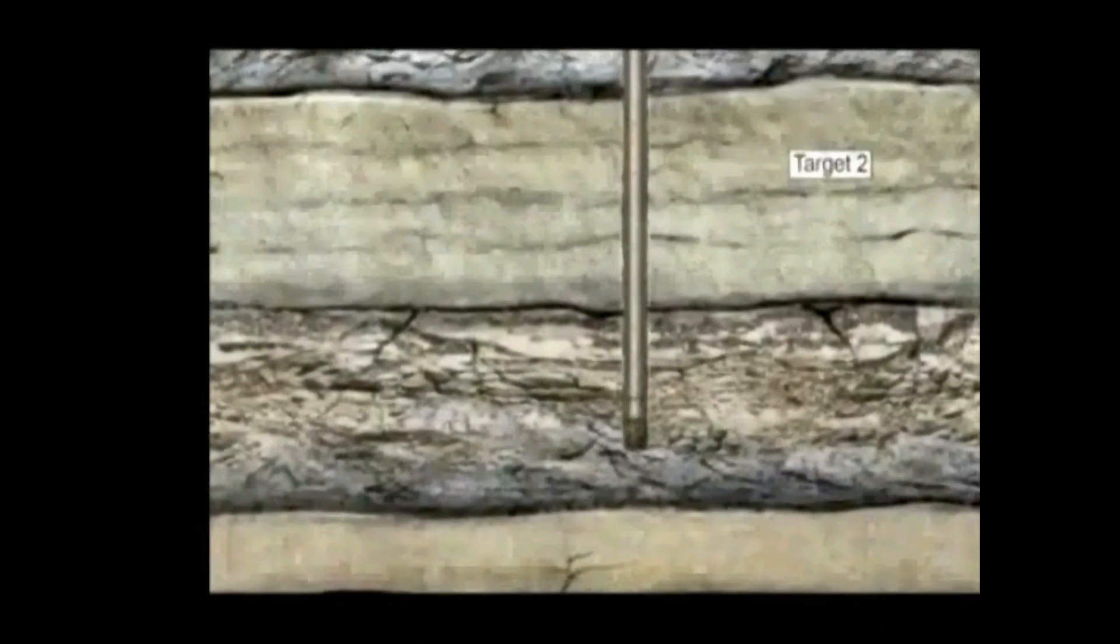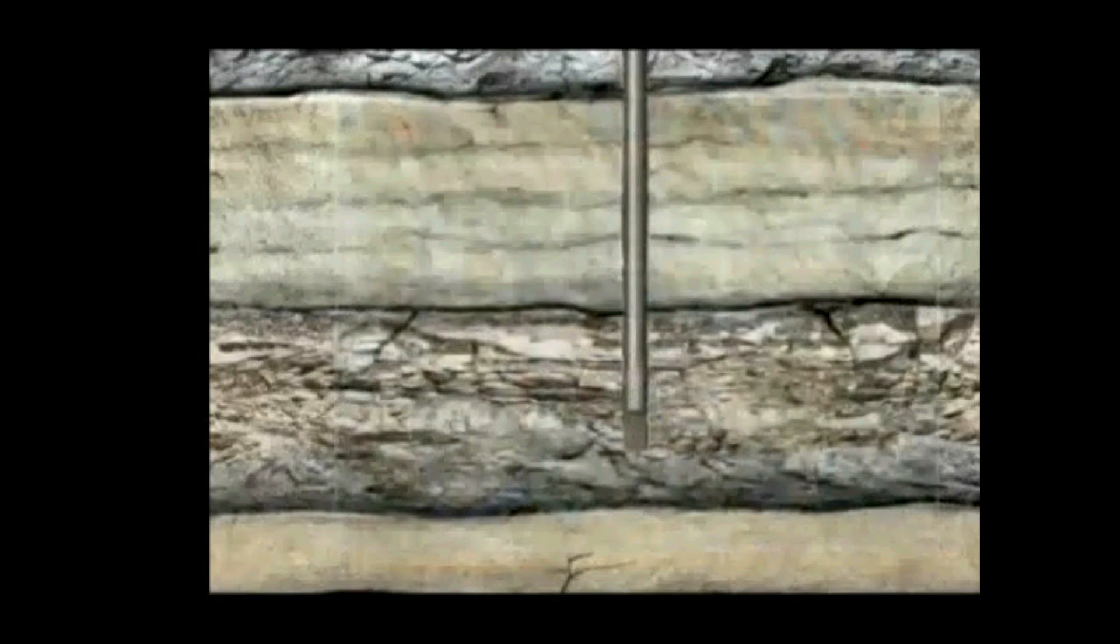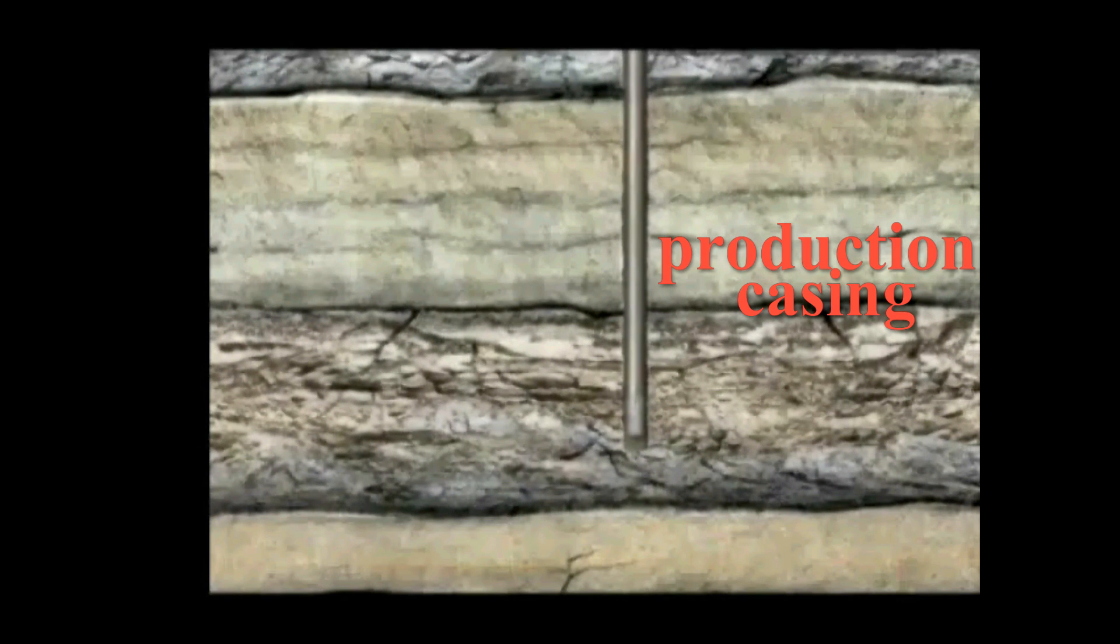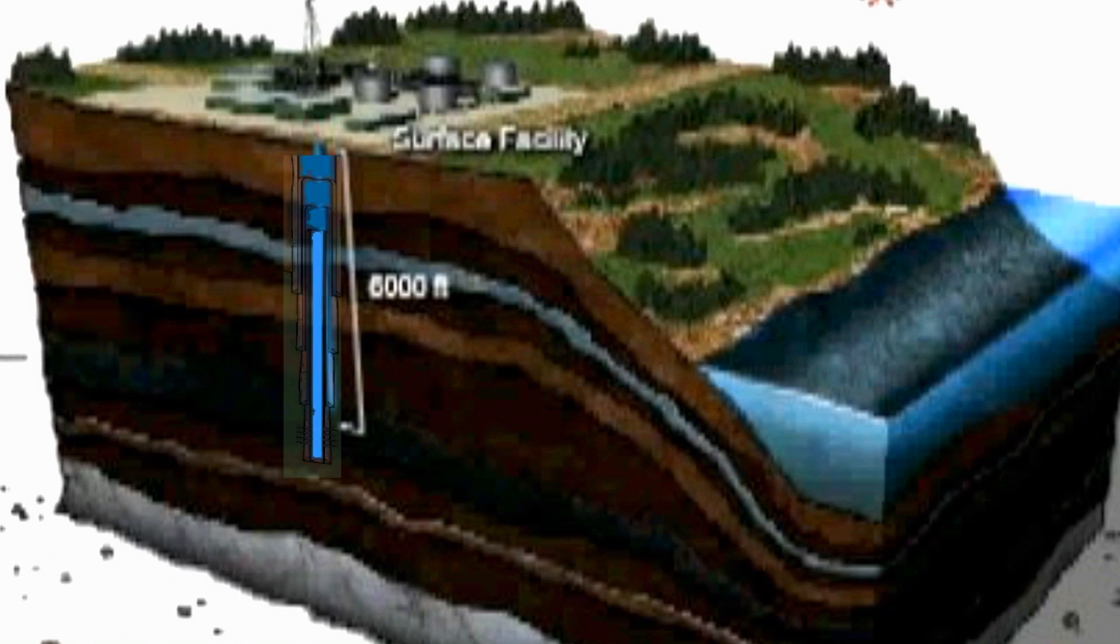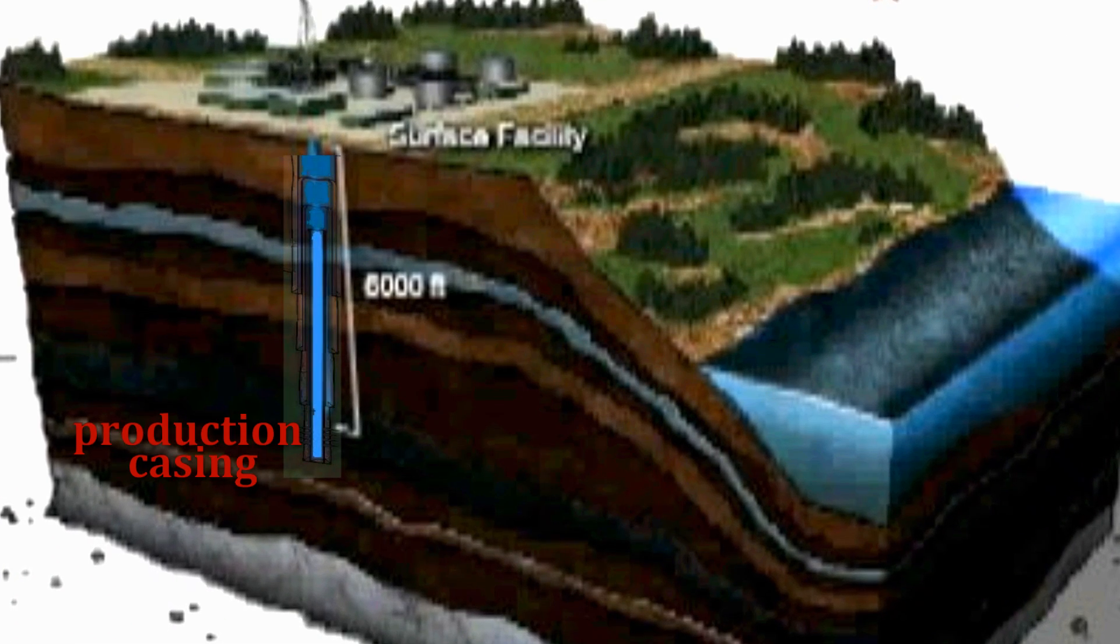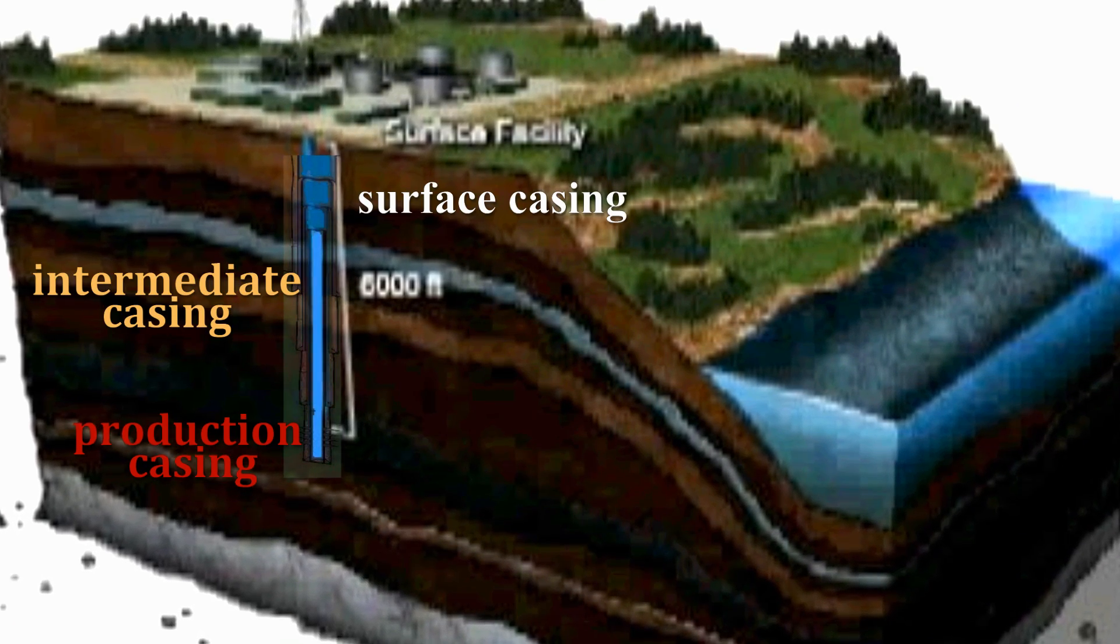When we talk about running casing in well completion, we are only referring to the casing that encases the zone or zones of interest in the open hole. These casing strings are referred to as production casing. It is sometimes easy to confuse the function of production casing with those of surface or intermediate casing. Let me explain.